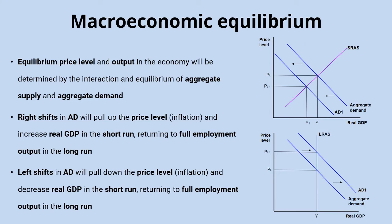With left shifts in aggregate demand — which could be caused by cutting government spending — that will reduce real GDP and price level in the short run. But in the long run, the economy again returns to full employment output, but this time at a lower price level.